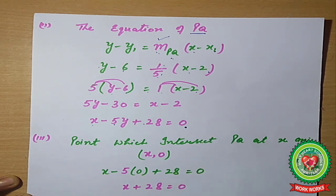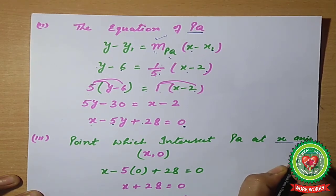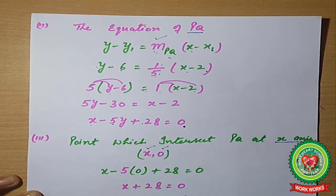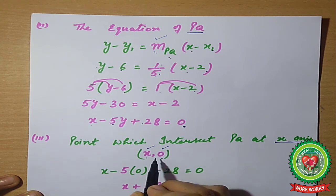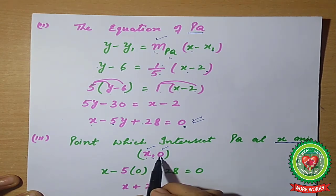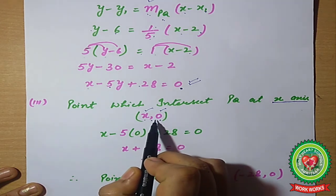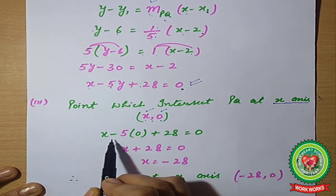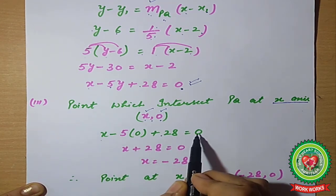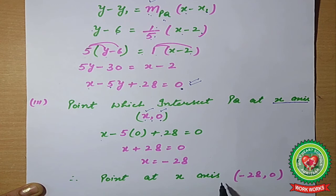For the third part, we find where PQ intersects the x-axis. On the x-axis, y = 0, so the point is (x, 0). Substituting into the equation x − 5(0) + 28 = 0 gives x = −28. Therefore, the required intersection point on the x-axis is (−28, 0).